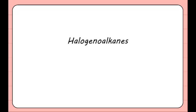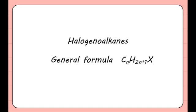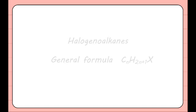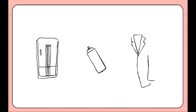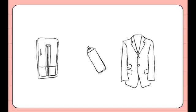Haloalkanes have the general formula CnH2n+1X, where X is a halogen. Historically, haloalkanes have been used as refrigerants, aerosol propellants and dry cleaning agents, owing to the fact that they are non-toxic and have a high volatility.